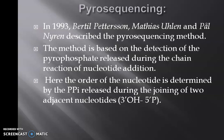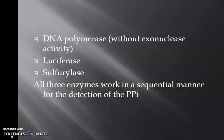That is 3'OH and 5'P. In contrast with other methods, instead of a single polymerase, two additional enzymes are required in the Pyrosequencing method. The main three enzymes involved are DNA polymerase without any exonuclease activity, luciferase and sulfurylase. All three enzymes work in a sequential manner for the detection of pyrophosphate.